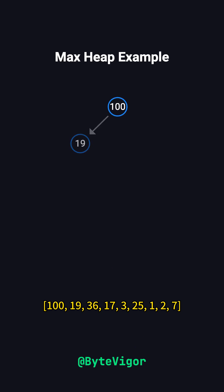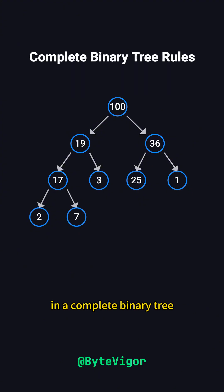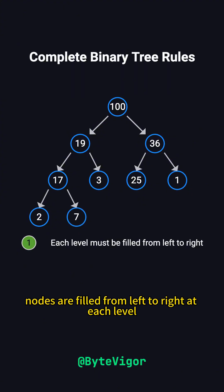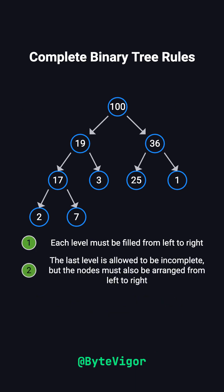Imagine a max heap with the values 100, 19, 36, 17, 3, 25, 1, 2, and 7. In a complete binary tree, nodes are filled from left to right at each level. The last level can be incomplete, but the nodes must still be aligned to the left.